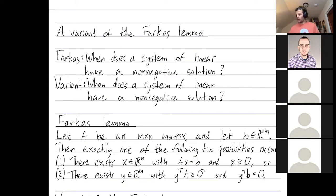So Farkas's Lemma tells you when does a system of linear equalities have a non-negative solution. Item one is when this system of linear equalities ax equals b has a non-negative solution x greater than or equal to zero. Farkas's Lemma tells you when that happens, and when that doesn't happen, it tells you some useful things in item two.